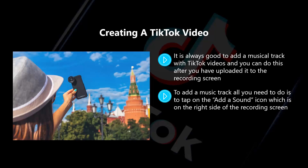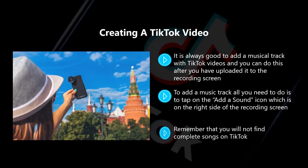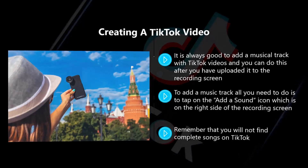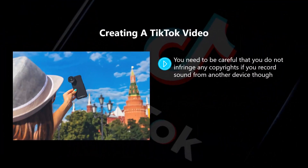To add a music track, tap on the add a sound icon on the right side of the recording screen. You will then see a streaming menu of songs and artists, similar to Spotify — browse the most popular tracks on TikTok, and you can also find other songs on Apple Music. Remember that you will not find complete songs on TikTok; instead you will find short clips to use with your short videos. You cannot edit these clips, but there is a solution: you can actually play music on another device while shooting video in TikTok, and it will be registered as an original sound. Be careful not to infringe any copyrights if you record sound from another device.